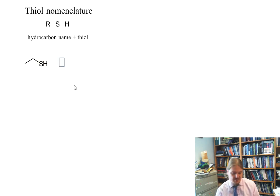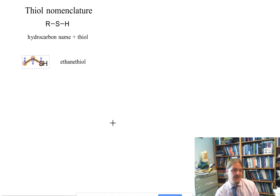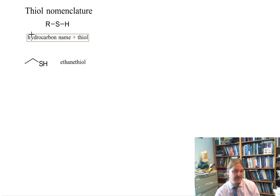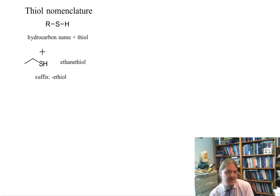As we get more complicated, we need to use locants and other things to help sort out the structure. Here's a simple thiol. This is a molecule that has two carbon atoms and thiol. So the hydrocarbon that this is built from is ethane, two carbons, and we just add thiol. Thiols are generally named by adding the thiol suffix name to the alkane name. The suffix for thiol is -ethiol. We keep the E in. It's not ethanthiol, it's ethanethiol.